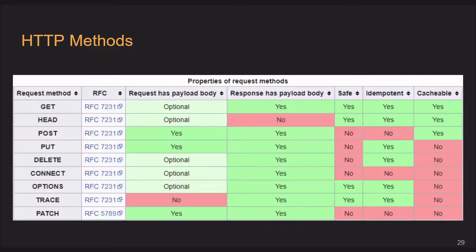Looking back at the HTTP methods table, we can see where requests are allowed to have a body and where responses are allowed to have a body. If you do provide a body in some of these requests or responses, oftentimes servers and browsers will strip them out for you, so don't expect it to work. This was actually expanded recently — things like CONNECT and OPTIONS didn't used to allow bodies, but now they're optional. Browsers may auto-reject it if they're not up to date, and if it's marked 'no,' it's guaranteed there's no body coming.